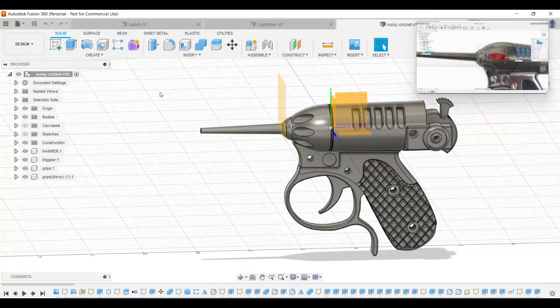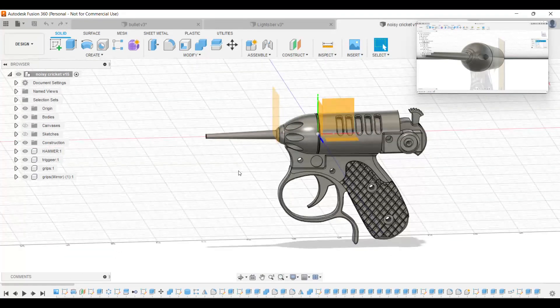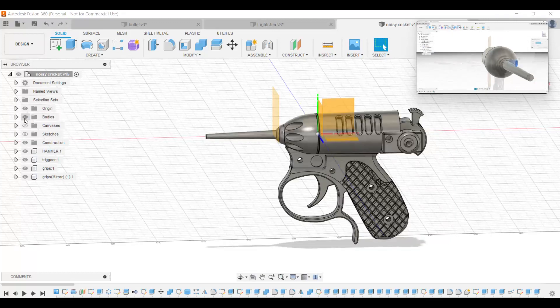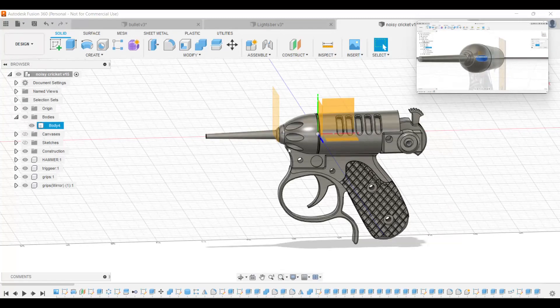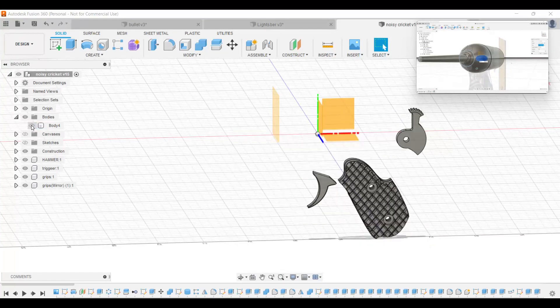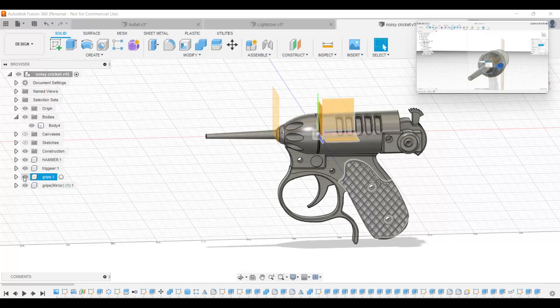Now, the final project, or like your graduation project, I guess you would call it, would be the Noisy Cricket from Men in Black. Now, this is quite a long project. I think the video is about an hour and 20 minutes. It took me a few evenings to sort of get this down. But again, you're breaking it all down into individual components. It's this main top body here, the hammer, the trigger, and the two grips on each side.